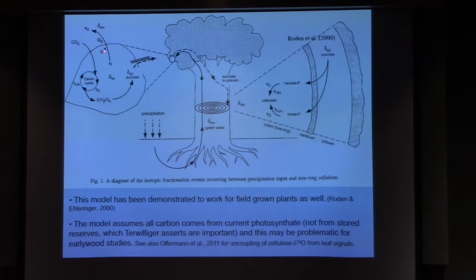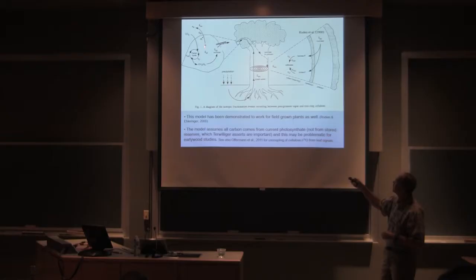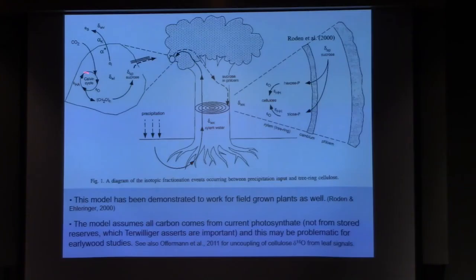Leaf water is not the same as xylem water because of the Craig Gordon, this evaporative enrichment, equilibrium and kinetic fractionation, and all the rest of that stuff. So the water in the leaf is now different, evaporatively enriched. In that medium, you do the photosynthetic Calvin cycle. You do an autotrophic fractionation.